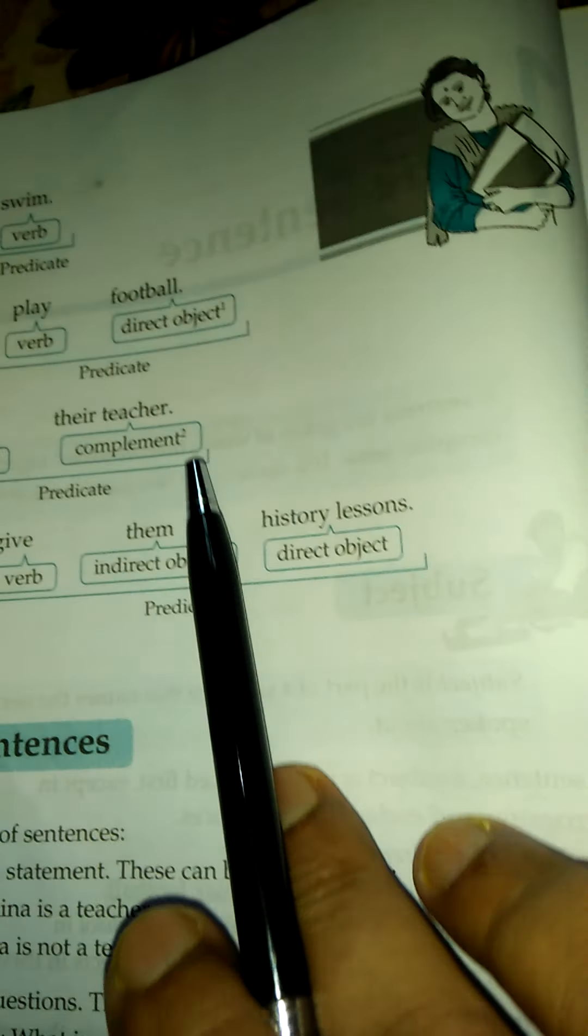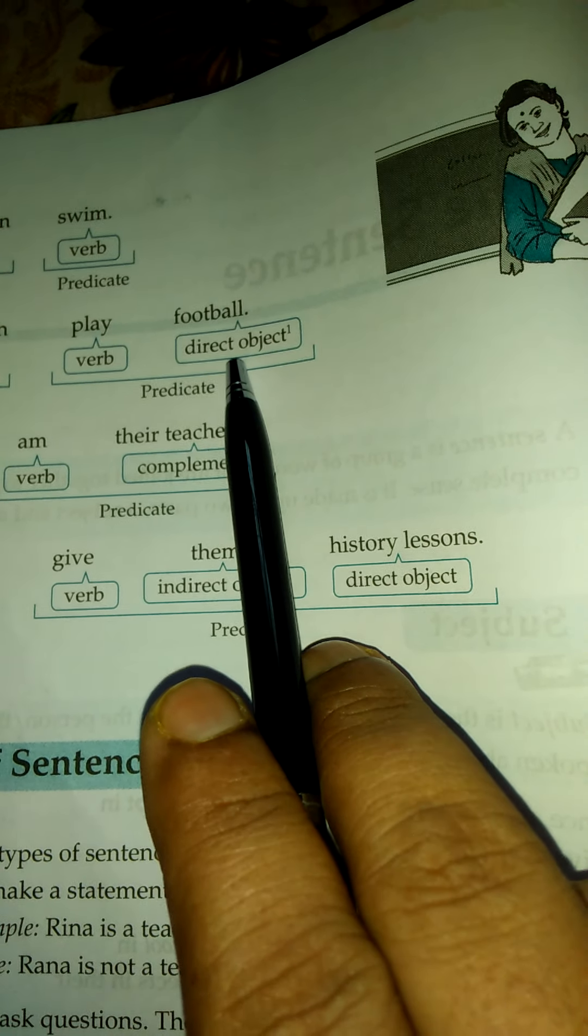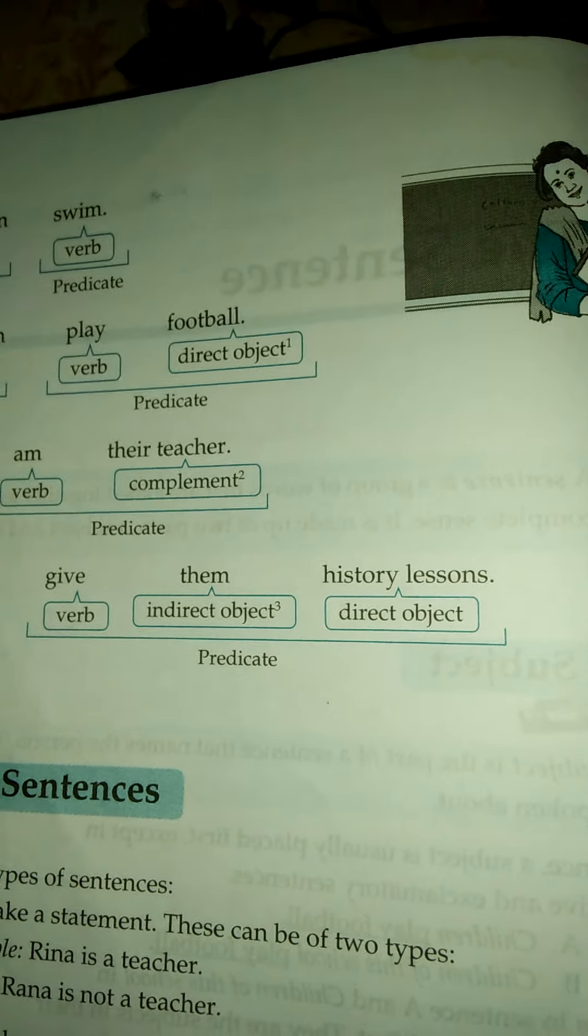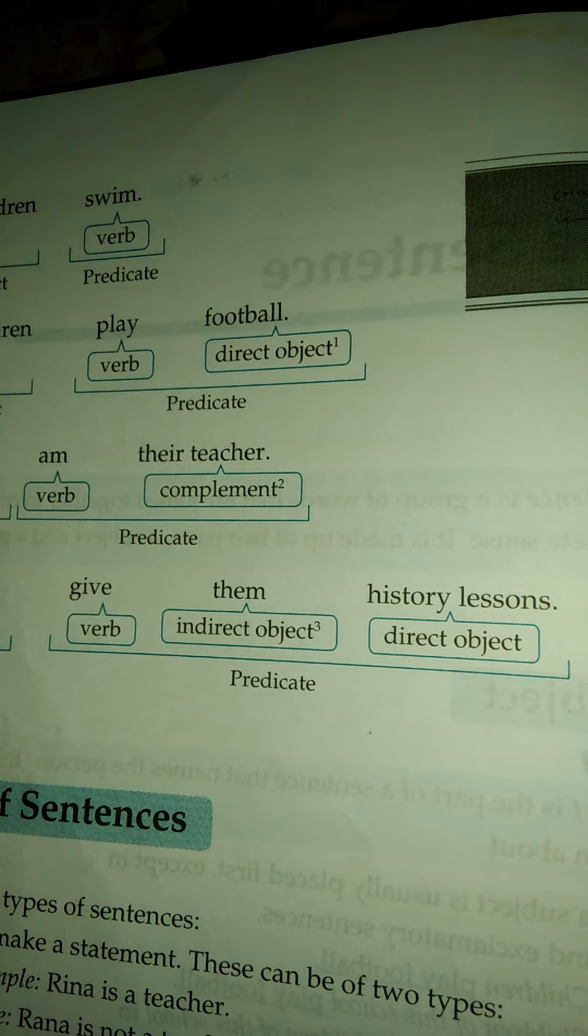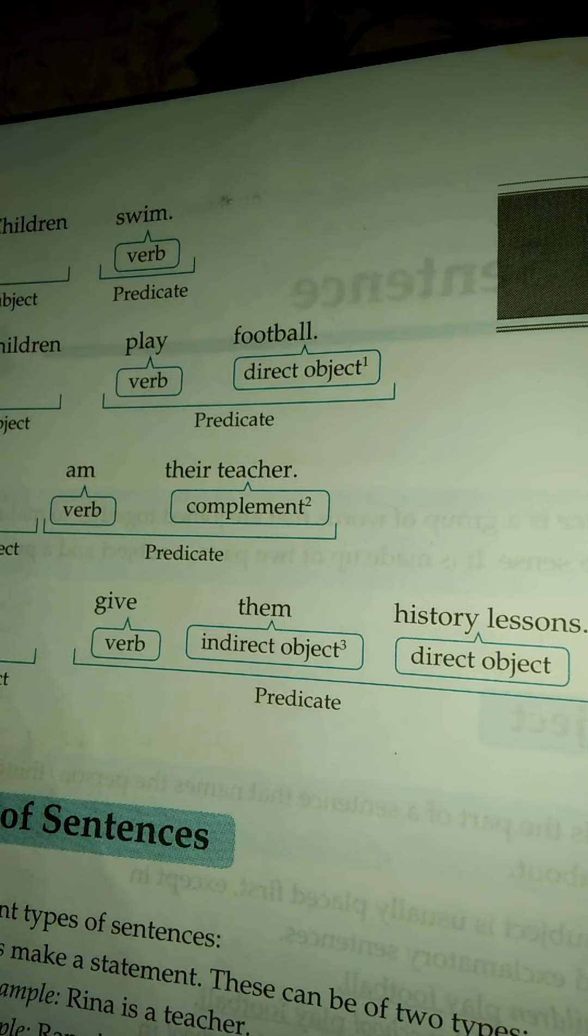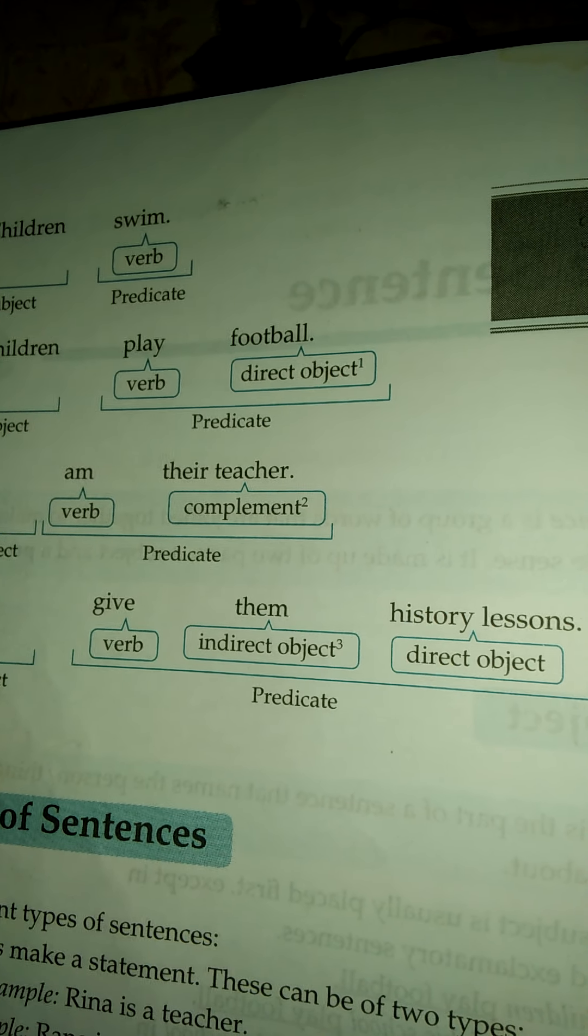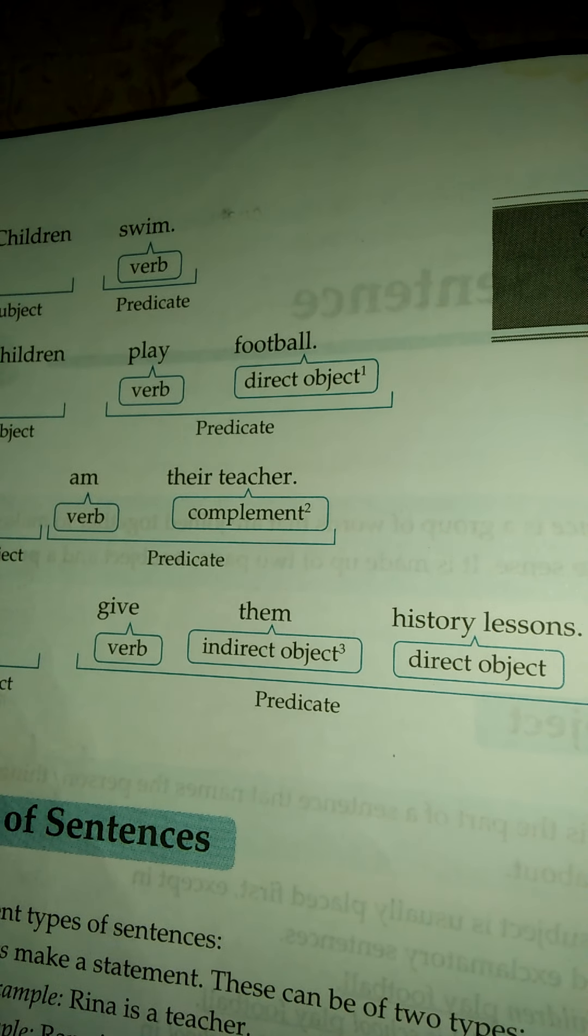Here we can see two important terms. The first is direct object and another is indirect object. The object showing the person for whom something is done or to whom something is said or given is called the indirect object.